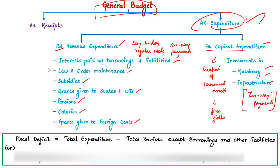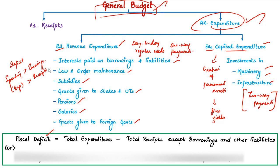The next basic concept is fiscal deficit. Deficit is a condition when your spending is greater than the money you earn. In budget terms, fiscal deficit means total expenditure minus total receipts excluding borrowings and other liabilities — it simply means the deficit that arises when the government's expenditure exceeds its revenues. You can also put it another way: the fiscal deficit value is nothing but the government's borrowings and other liabilities. We will later see a news article on fiscal deficit.